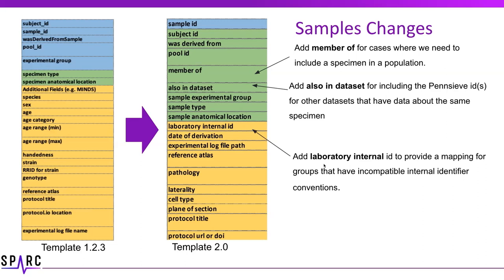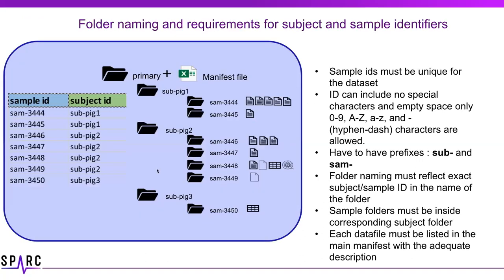So we've added an optional field. If you have a laboratory internal identifier for a particular specimen, you can simply add it here so you can see which particular sample or subject corresponds to which identifier. Sample IDs must be unique for the dataset — we will check for that. IDs can include no special characters, no empty spaces, and only essential characters: zero through nine, A through Z, and hyphen-dash characters are allowed. Subject and sample prefixes are required for all IDs so they can be added together.